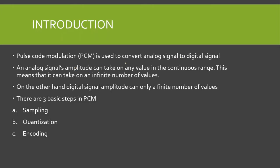An analog signal's amplitude can take on any value in a continuous range, which means it can take on an infinite number of values. On the other hand, a digital signal's amplitude can take on a finite number of values, which is normally a power of 2 — for example, 2^1, 2^2, 2^3, etc. So the digital signal can have a finite number of amplitudes, whereas the analog signal can have an infinite number of amplitudes.